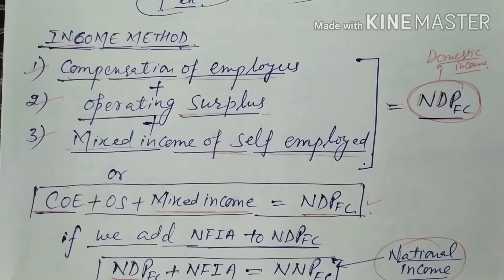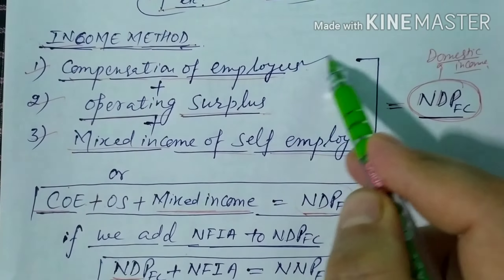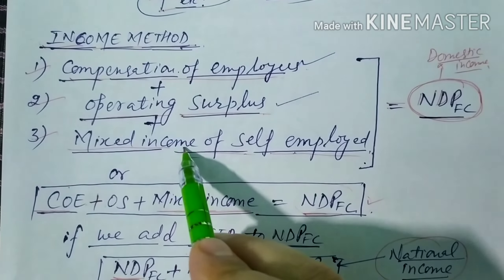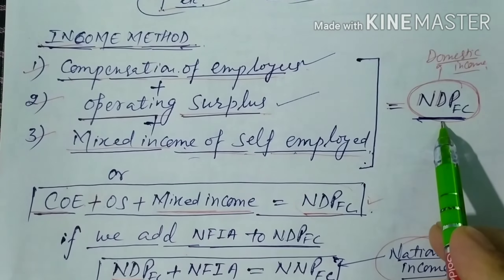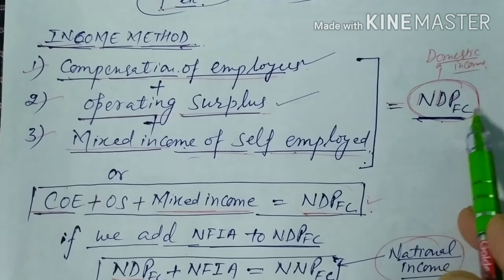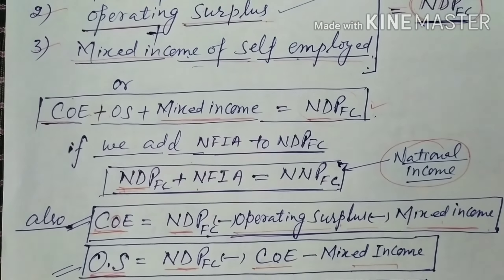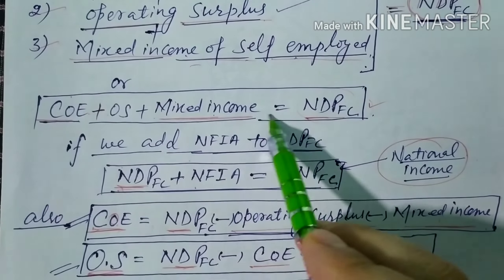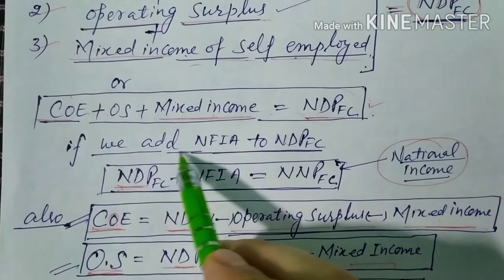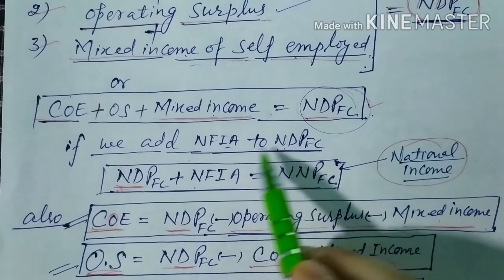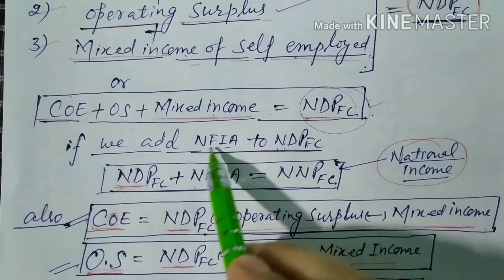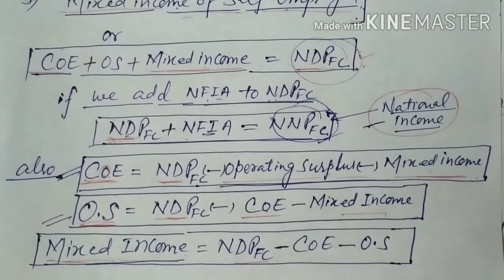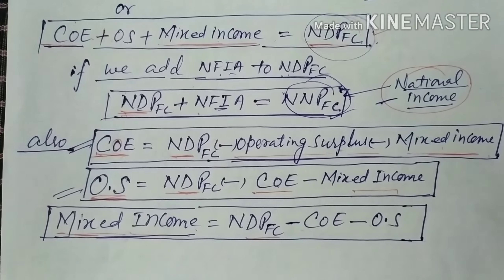Now, if we add compensation of employees plus operating surplus plus mixed income, we get NDPFC — net domestic product at factor cost, which is called domestic income. In short: COE + OS + Mixed Income = NDPFC. If we add NFIA to NDPFC, we get national income — NNPFC.